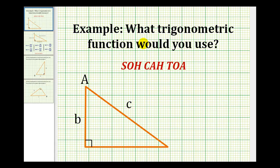In these examples, we want to determine what trigonometric function we would use based upon the given information in the right triangle. This question reviews the definition of the trig functions as ratios of the lengths of sides of right triangles. To do this, we should identify the opposite side, adjacent side, and hypotenuse in relation to angle A.